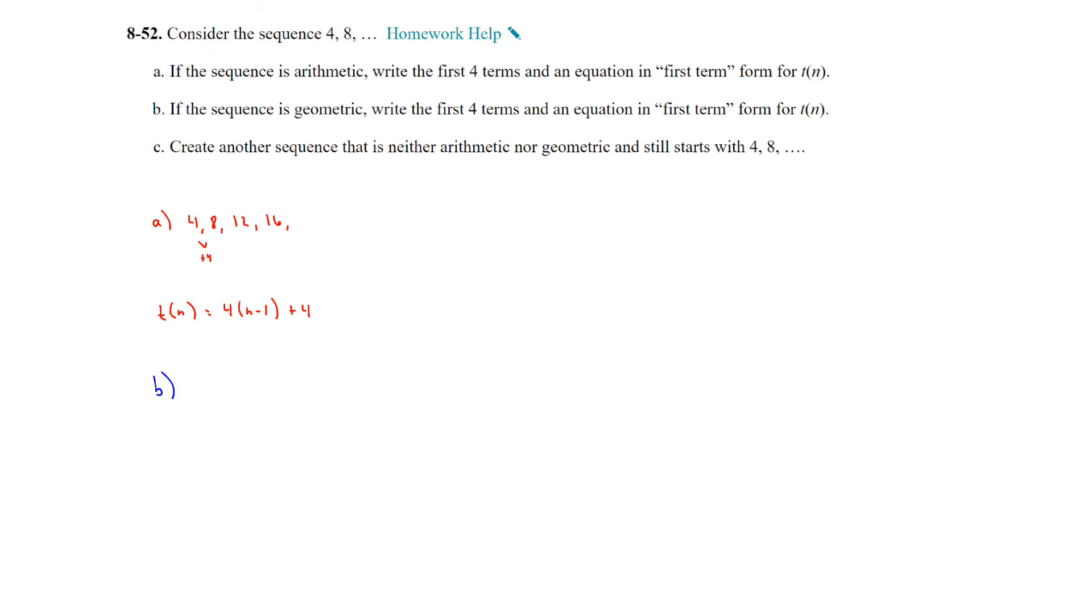Part b now says if the sequence is geometric, do the same thing. So if it is geometric, 4, 8 means that you are multiplying by 2. So this would be 16, 32, and then the equation in first term form would be t of n. Your first term is 4, the multiplier is 2, and we will raise that to n minus 1.